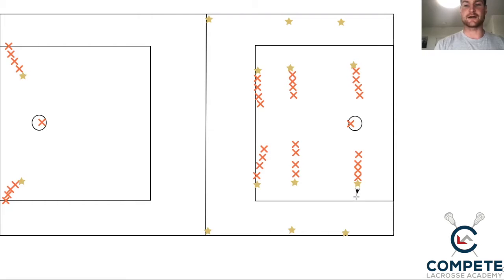And the black arrow is going to be the movement of each player. So this is our banana cut to the sideline.